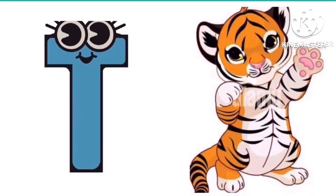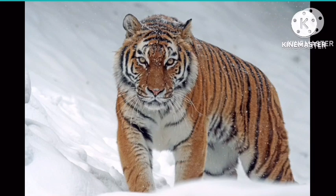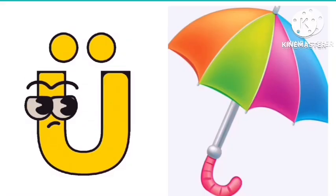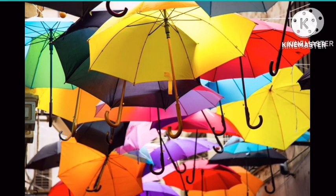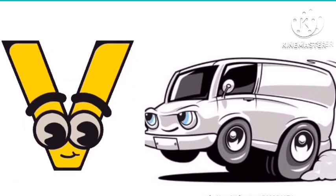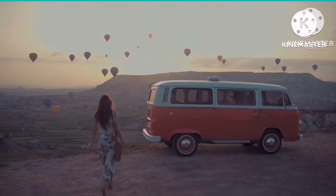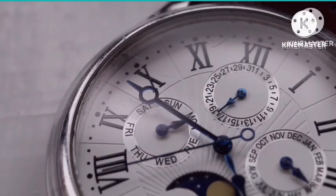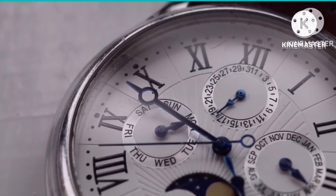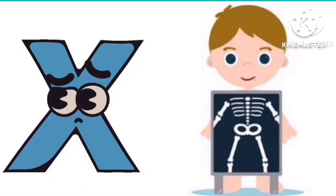T is for tiger. U is for umbrella. V is for van. W is for watch. X is for X-ray.